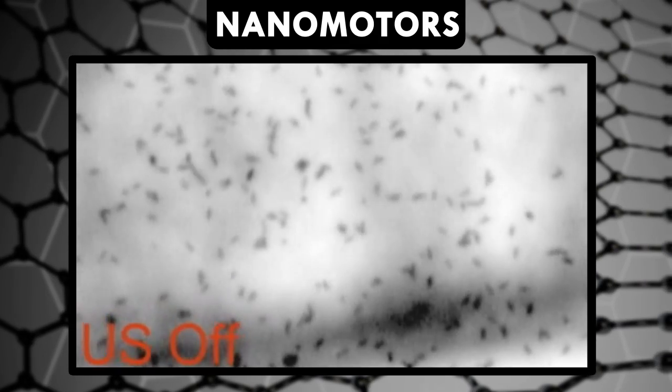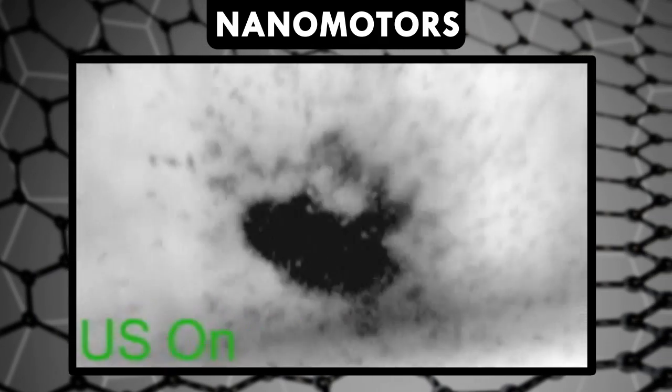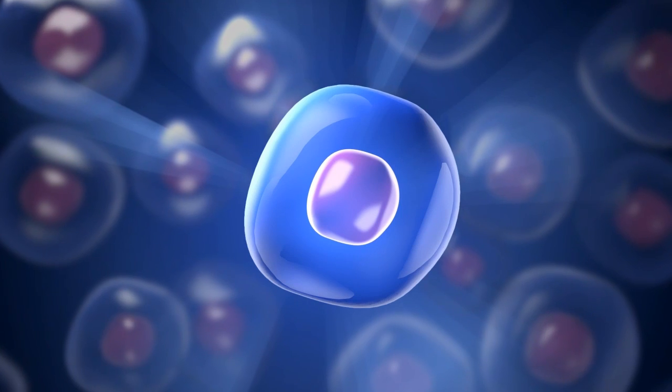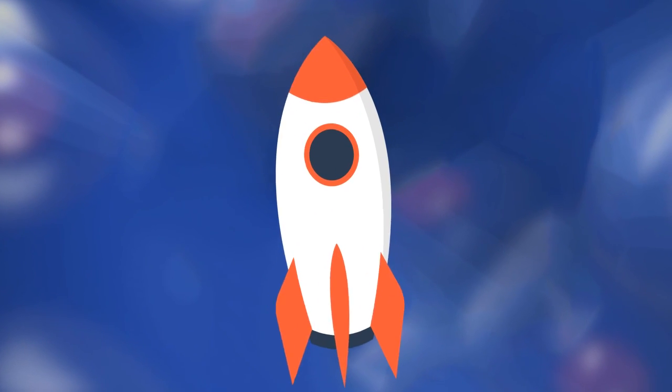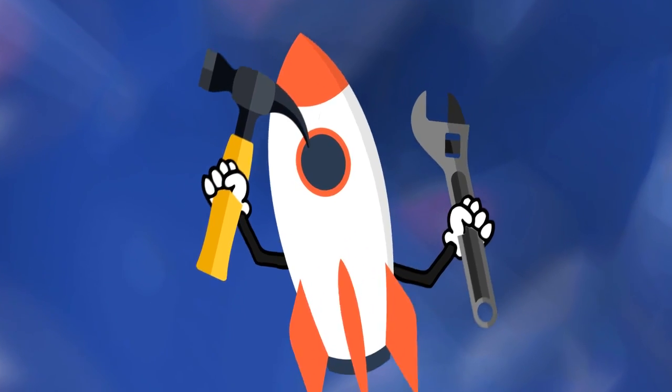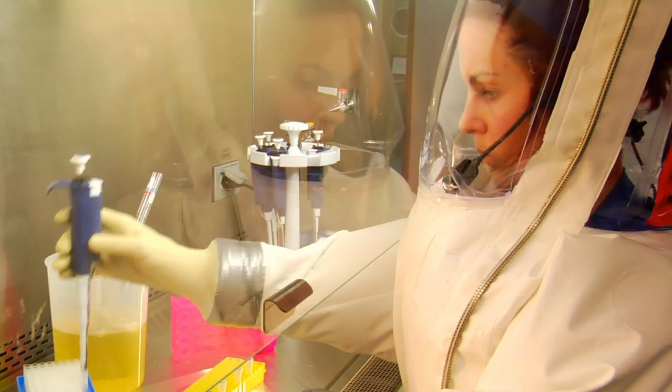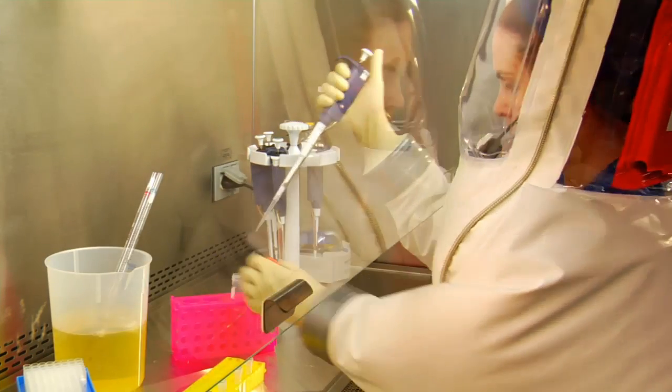These incredibly small gadgets are made from molecules that are orders of magnitude smaller than a human cell. They move, change form, and most importantly, do work on their environment, all thanks to scientists controlling their chemical and physical properties.